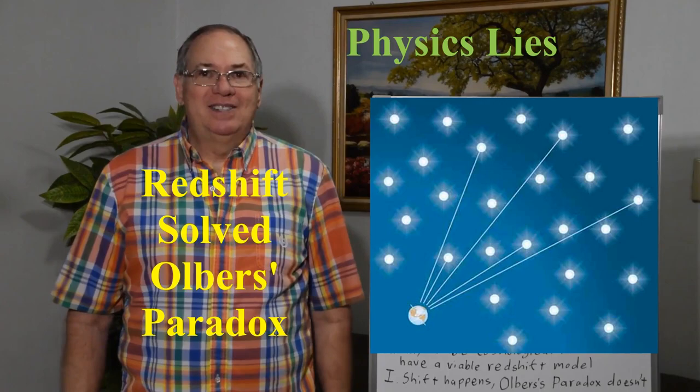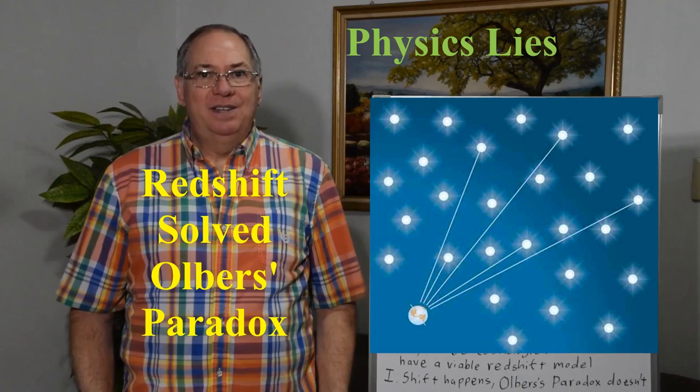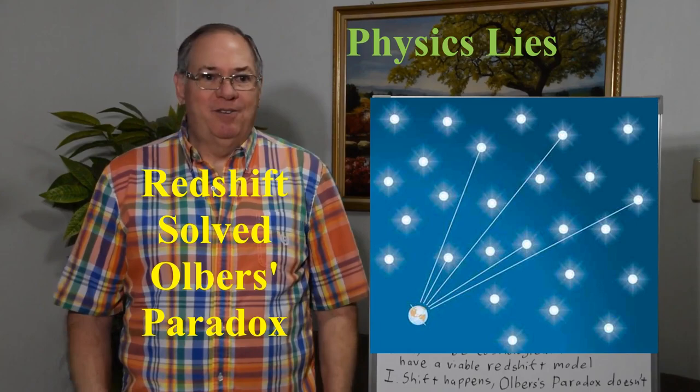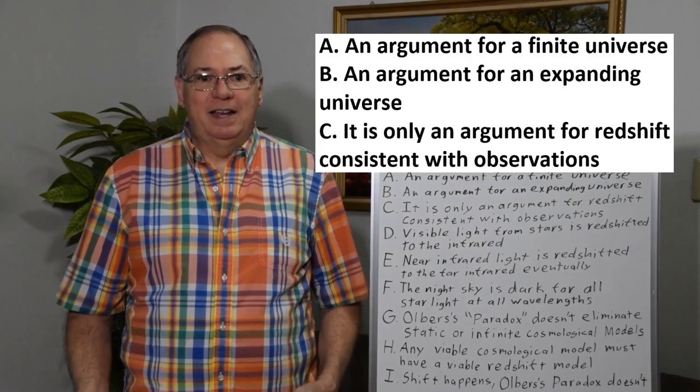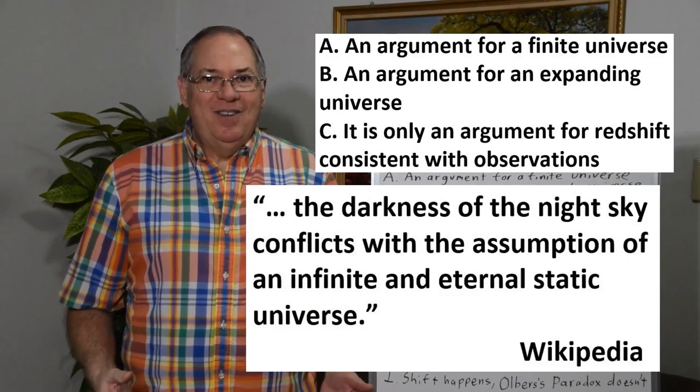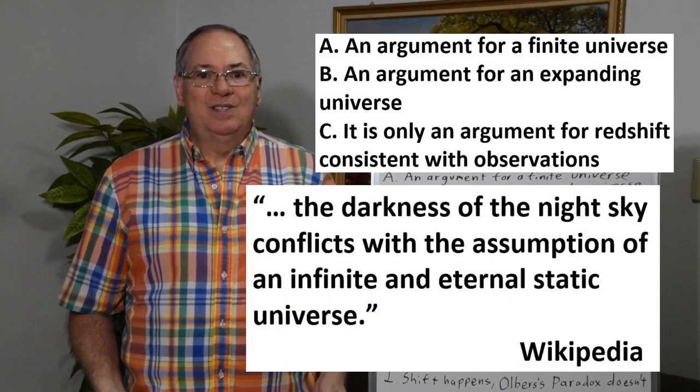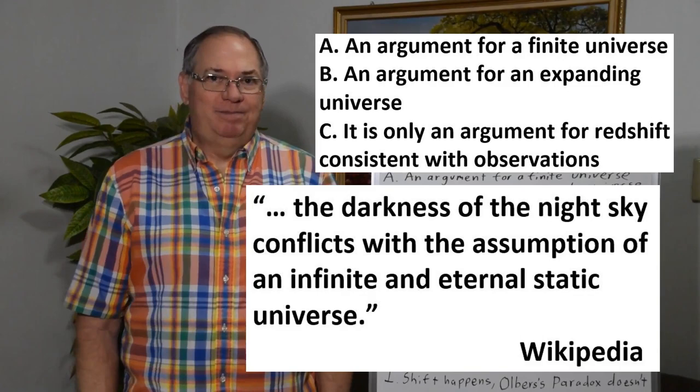Today I wanted to talk about how Redshift solved Olber's Paradox. Big Bangers love to use Olber's Paradox as one of the reasons why the Big Bang has to be true. They claim that Olber's Paradox is the reason there has to be a finite universe — both finite in extent and finite in time. If you go to Wikipedia now, you can read: 'the darkness of the night sky conflicts with the assumption of an infinite and eternal static universe.'